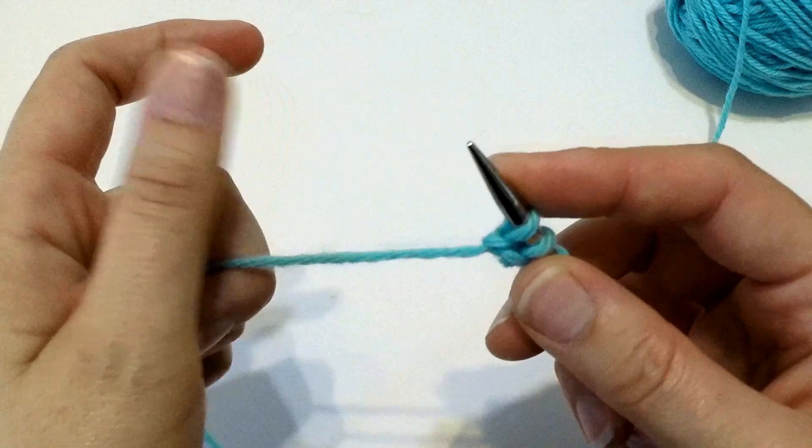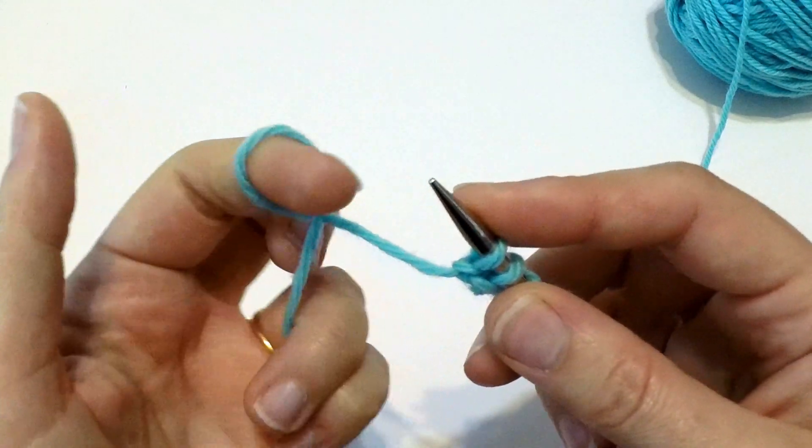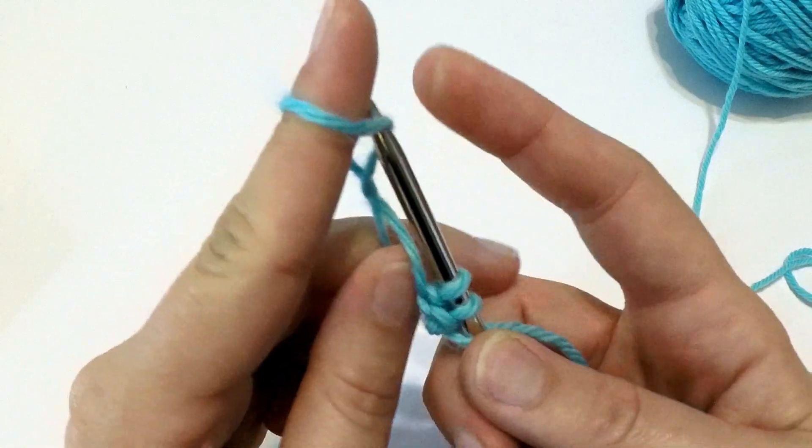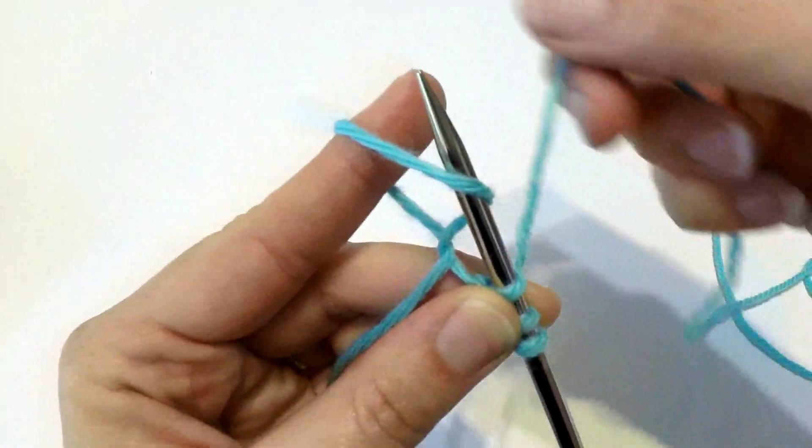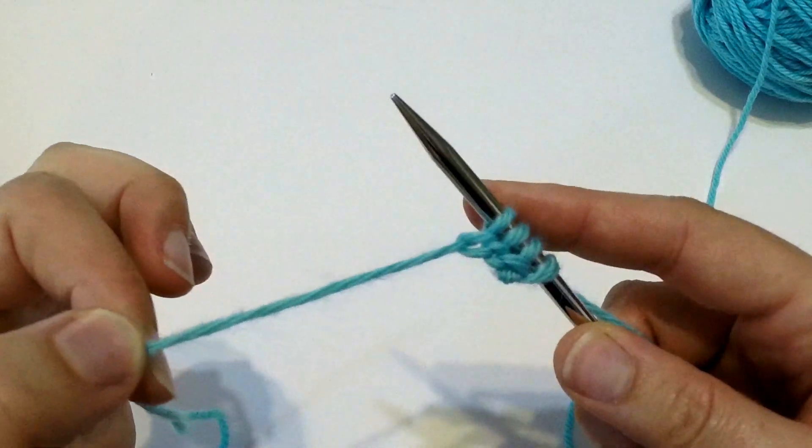All right, so we'll do it again one more time. Scoop, bend, flick up, and then knit that twisted loop, and give it a little tug.